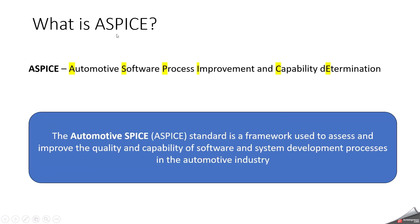First, we can start with what is ASPICE. ASPICE stands for Automotive Software Process Improvement and Capability Determination, and ASPICE is based on ISO 15504. ASPICE is a set of guidelines and best practices for software development and system engineering processes in the automotive industry.